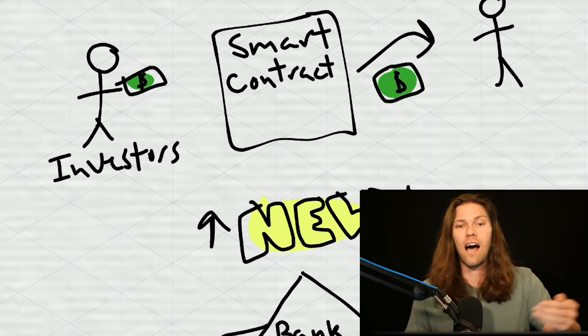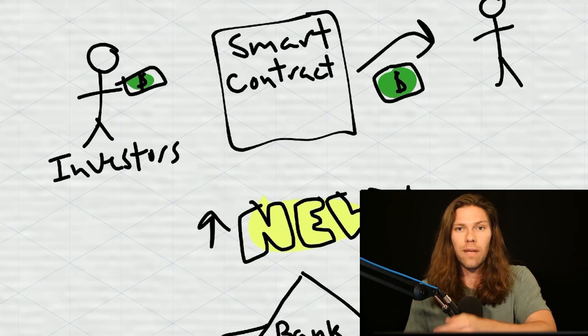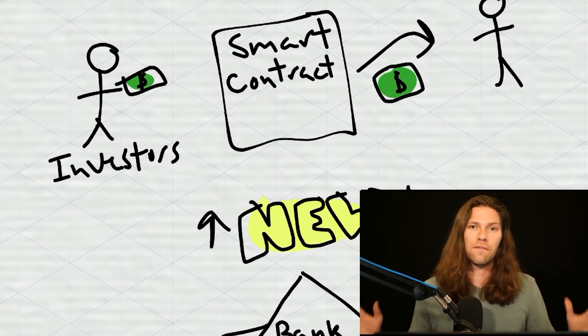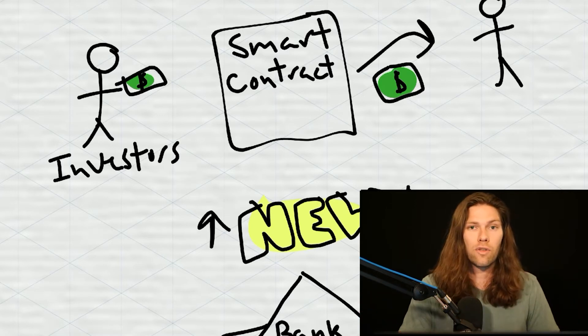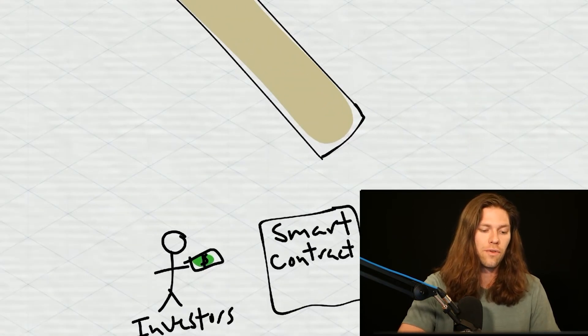The investor gets a higher return. The person pays a lower interest rate. There's less friction. Everything is better. This already is trillion dollar disruption. So let's do another use case.